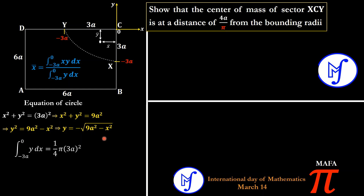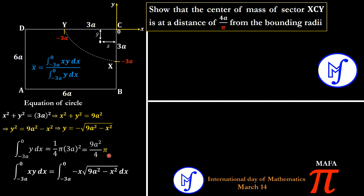The integral from negative 3a to zero of y dx defines the area bounded by the curve, which is the area of the sector. Since this sector is one quarter of the full circle, its area is (1/4)·π·(3a)² = 9πa²/4. This is the denominator in our centroid formula, and it is here that π comes into play.